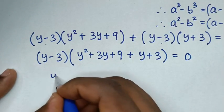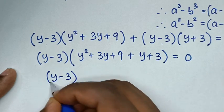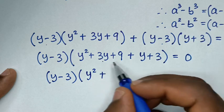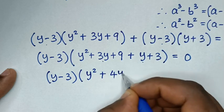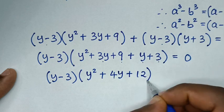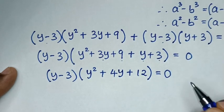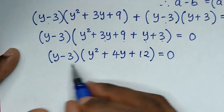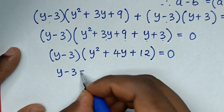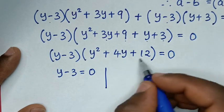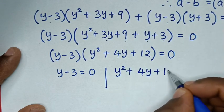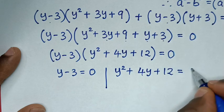Then in the next step, combining the terms inside gives (y − 3)(y² + 4y + 12) is equal to 0. We then have two solutions: the first is y minus 3 equals 0, and the second is y squared plus 4y plus 12 equals 0.